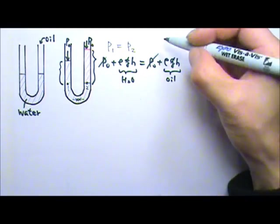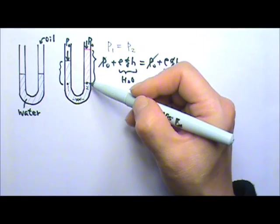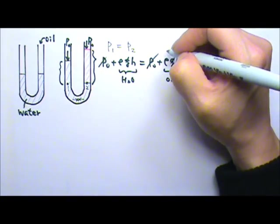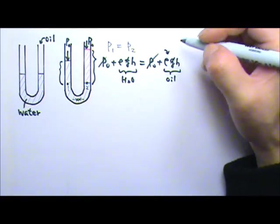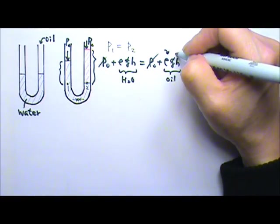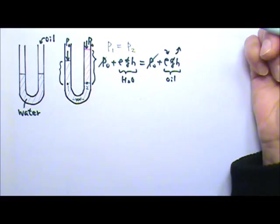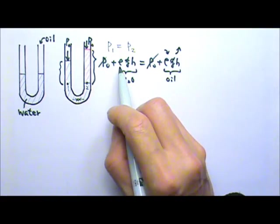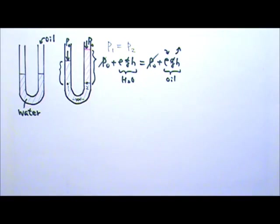That means the oil, since oil can float on top of the water, oil must have a density that is lower. For the lower density, it must have a higher column in order for the ρ times h to equal to the ρ times h for water.